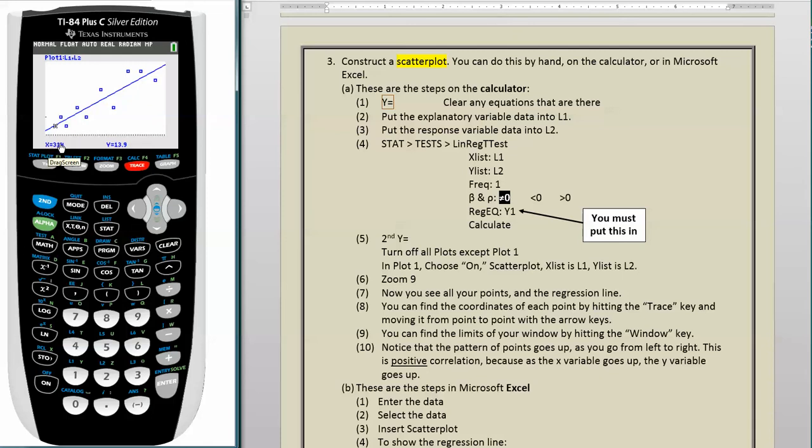You can find the limits of your window by hitting the WINDOW key. So that tells you that that window we looked at a minute ago, so on the X axis there was a minimum of 308.5, and still on the X axis there was a maximum of 374.5. Same thing with the Y axis. And you can play with the size of your window if you want. And when you hit ZOOM 9, you're telling the calculator to set its own window limits. Notice that the pattern of points goes up as you go from left to right. This is positive correlation because as the X variable goes up, the Y variable goes up.